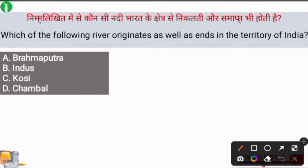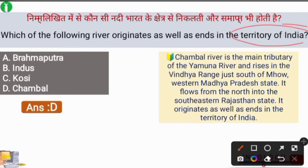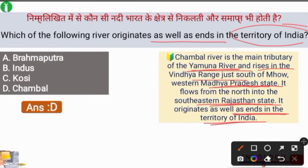Next question: Which river originates as well as ends in the territory of India? The right answer is option D, the Chambal River. Chambal is a river that originates in India and ends in India. The Chambal River is the main tributary of the Yamuna River. It rises in the Vindhya range, just south of Mhow in western Madhya Pradesh, and flows northward into southeastern Rajasthan.